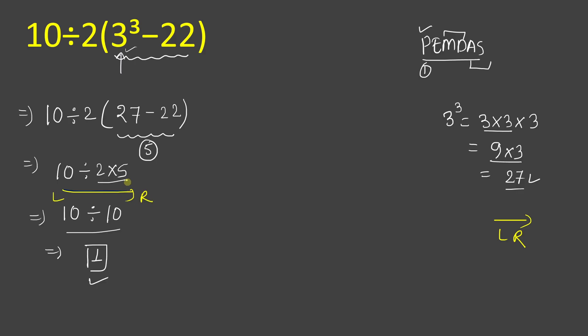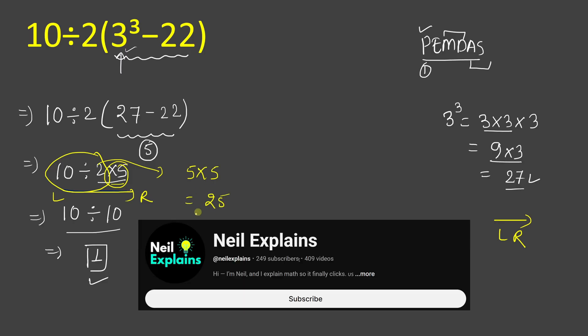So we will write this as 5 times 5, and 5 times 5 is equal to 25. So the right answer is 25, not 1. If you love math then subscribe us for more videos. Thanks for watching.